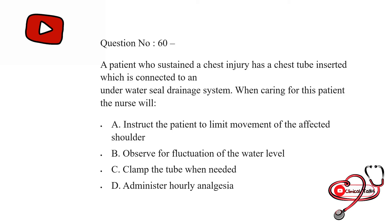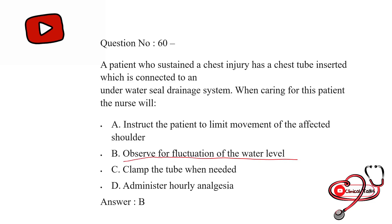A patient who sustained a chest injury has a chest tube inserted which is connected to the underwater seal drainage system. When caring for the patient, the nurse will: option first: instruct the patient to limit movement of the affected shoulder; second: observe for fluctuation of the water seal; third: clamp the tube when needed; last: administer hourly analgesia. The correct answer is B — observe for fluctuation of the water seal level.